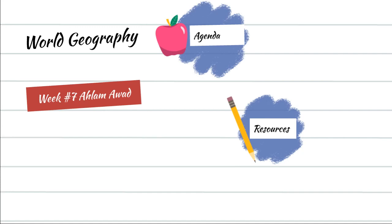In Week 7, we're going to be concluding Unit 1 and moving on to Unit 2, which will get us to focus on the United States and Canada.